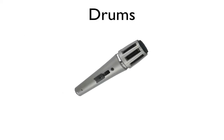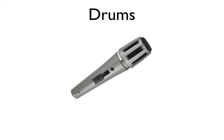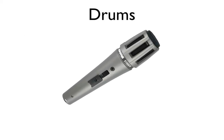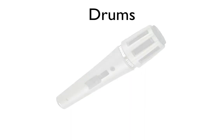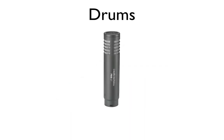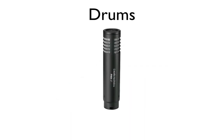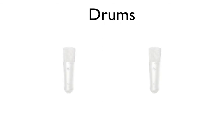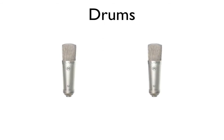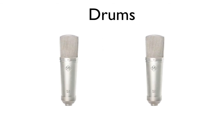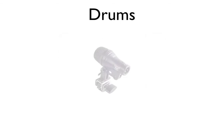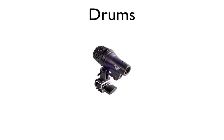For drums, you normally want to stick with cardioid dynamic mics, but it also depends on what you're micing. A small cardioid condenser mic on a hi-hat would work really nice. If you're micing overheads, a pair of large or small diaphragm condensers would work great for that.